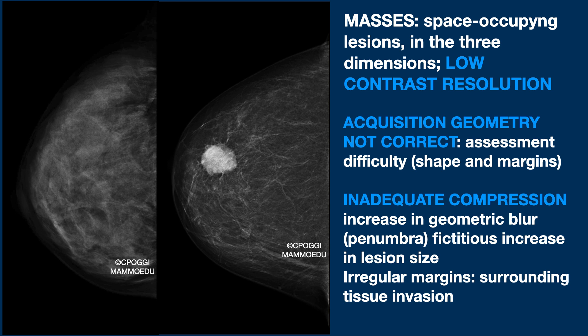Shape and margins are especially important. Compression is crucial. If it is not adequate, a dramatic increase in blur is introduced, which leads to a fictitious increase in lesion size. In addition, remember that evaluating the margins in detail is important. Irregular margins may indicate invasion of the surrounding tissue.